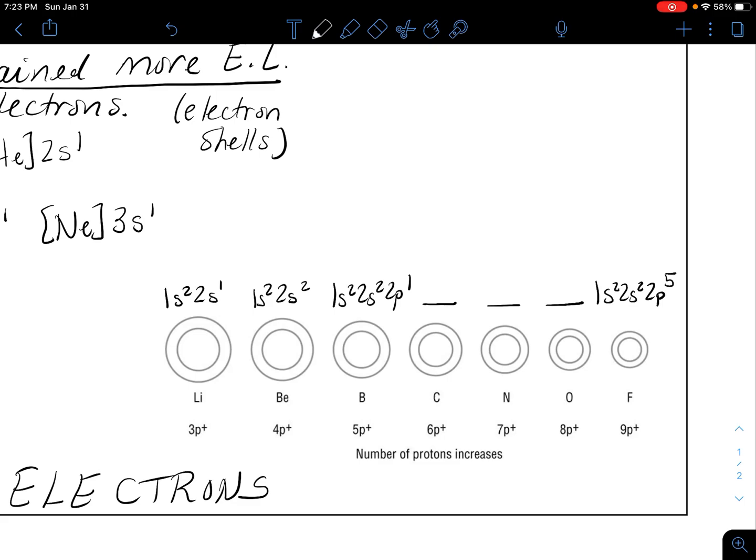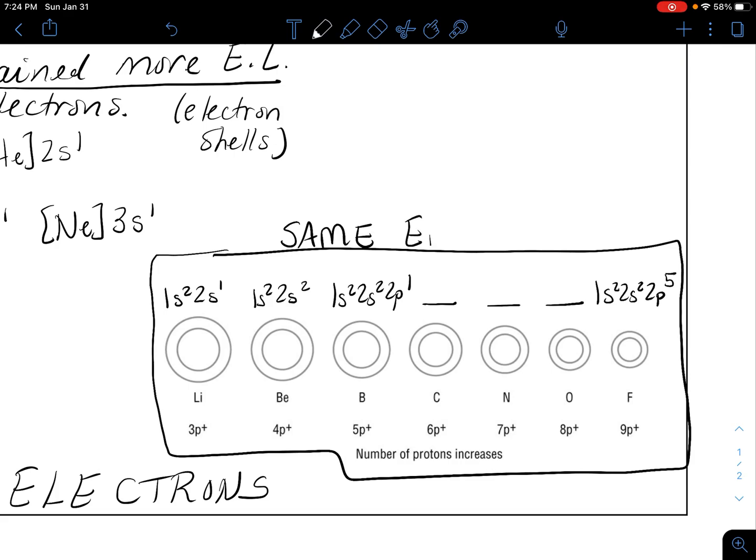Here's the key. There is the same energy level. The number of protons is increasing, atomic number is increasing, but these all have the same energy level. We can't talk about them gaining or losing energy levels or having more or less. They all actually fill their electrons to the second energy level, but it's this proton count that is increasing.